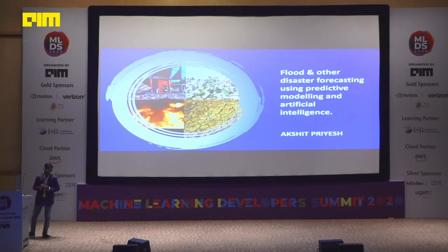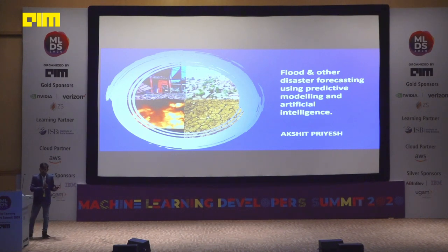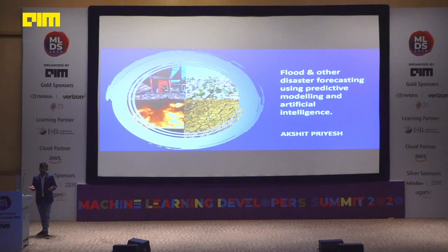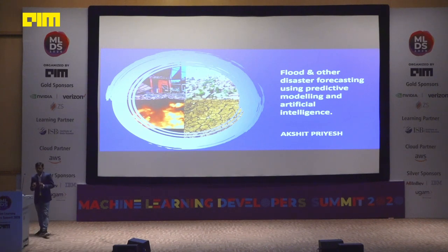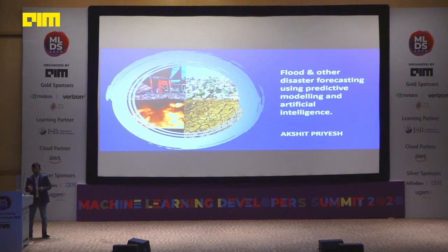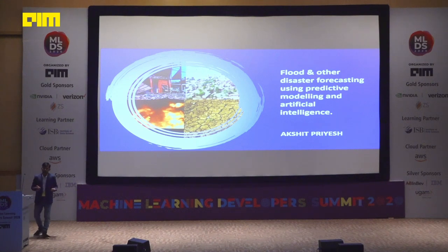Cutting back to the last two years, when a cyclone of the same intensity came to Odisha, the state managed to reduce casualties to 64. From 10,000 to 64 — 64 is also a devastating figure since life is most important, but it is also an achievement for a state prone to cyclones, tsunamis, and floods.